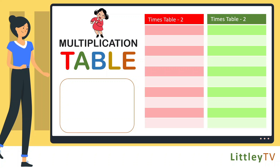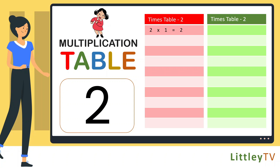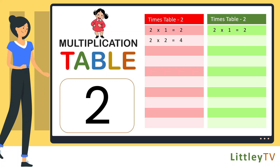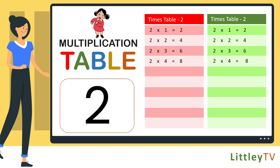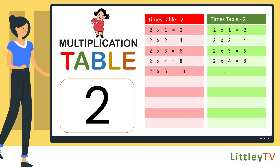Table of 2. 2 ones are 2, 2 twos are 4, 2 threes are 6, 2 fours are 8, 2 fives are 10.